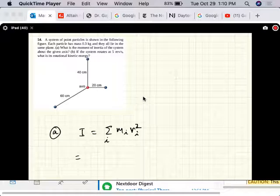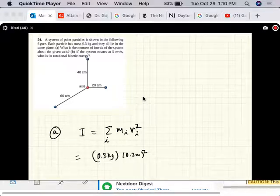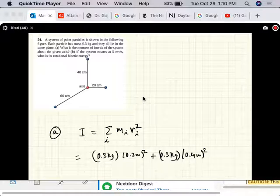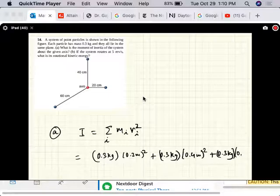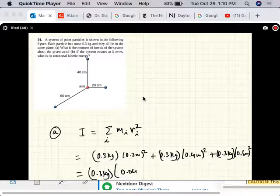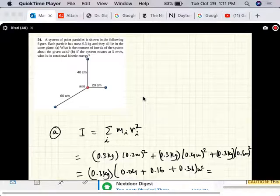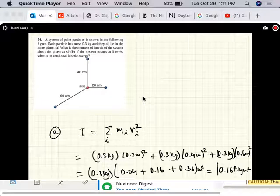So each is 0.3 kg times 0.2 meters squared. So this guy is 0.2 meters away, this guy is 0.4 meters away, this guy is 0.6 meters away. Plus 0.3 kg, 0.4 meters, this is just 0.4 meters away. So there's the moment of inertia.